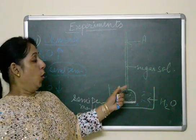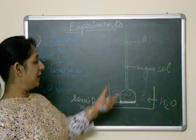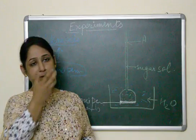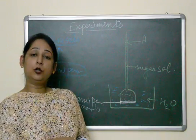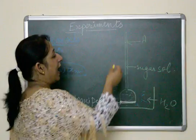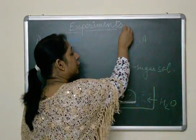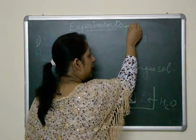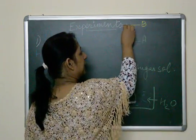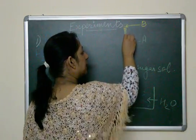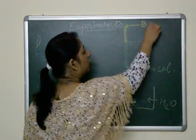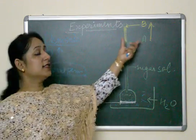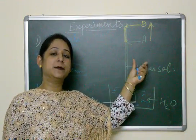Now what will we observe? We will set up this apparatus and keep it aside for one or two hours. After that time, we will observe that the level of sugar solution in the thistle funnel will rise to a level which we will mark as B.